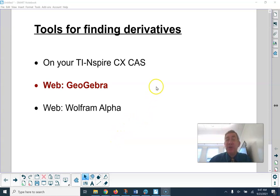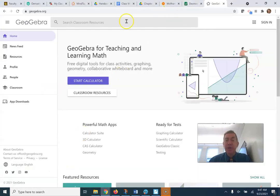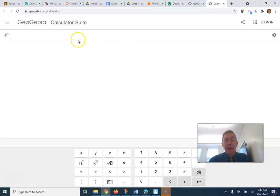Hello again team! This is going to be version two of three tools for finding derivatives electronically. This one is GeoGebra. So surf on over to geogebra.org and start calculator, or use the links on myHB.